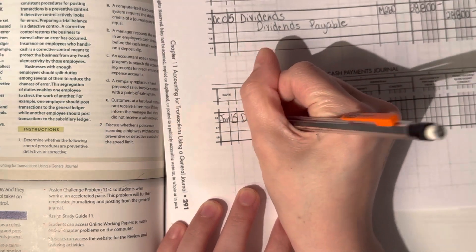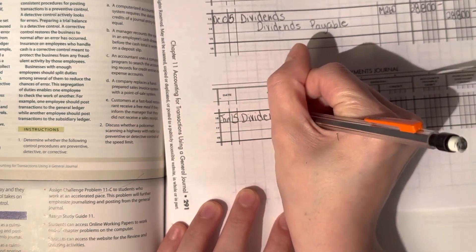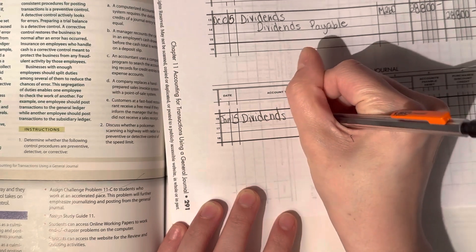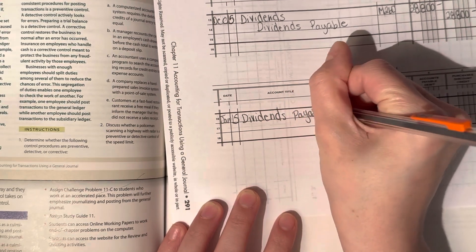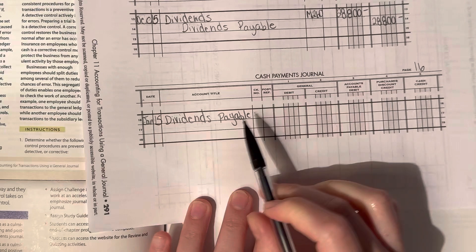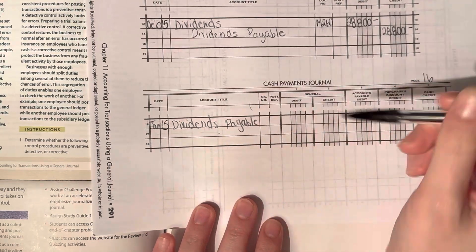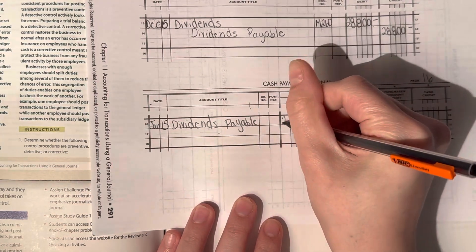So anyways, we're paying off the dividends. The account that is going to be debited is dividends payable. So dividends payable for $28,800.